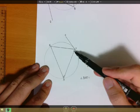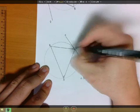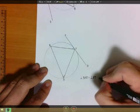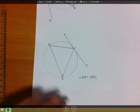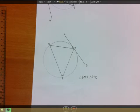1, 2. Angle BTC is equals to angle BAT using the alternate segment theorem.